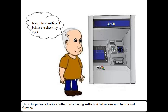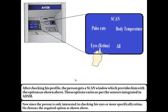Here the person checks whether he has sufficient balance to proceed further. He has sufficient balance to check his eyes. After checking his profile, the person gets a scan window which provides him with the options as shown above — that is, pulse rate, body temperature, eyes or more technically retina, or all. These options vary as per the sensors integrated in the AHSM. Since the person is only interested in checking his eyes, or more specifically retina, he chooses the retina option as shown above.